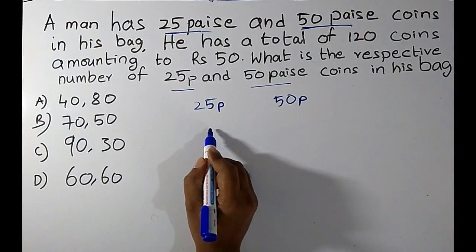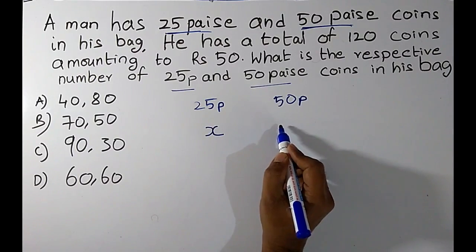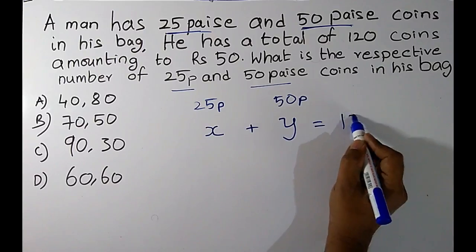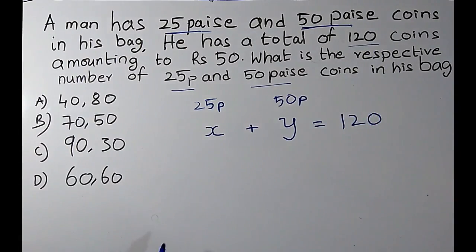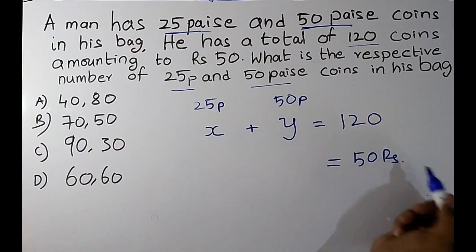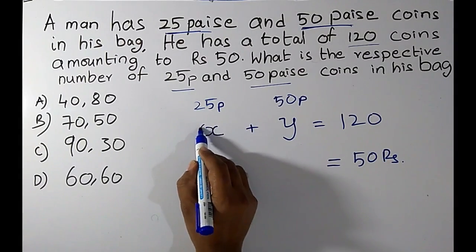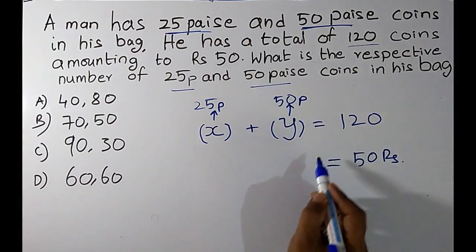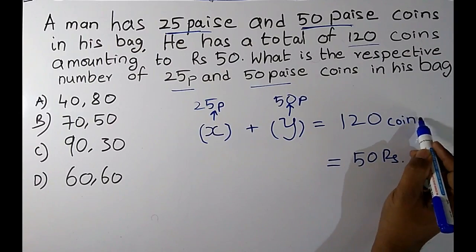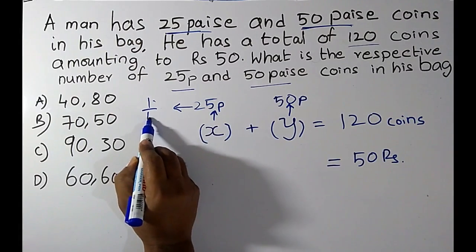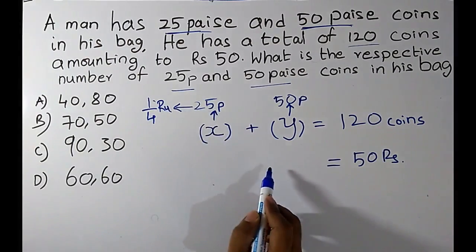We think of it as: we have X number of 25 paise coins and Y number of 50 paise coins, and their sum equals 120, which is given in the question. The value of these coins equals 50 rupees. X is the number of 25 paise coins, Y is the number of 50 paise coins, and 120 is the total number of coins.